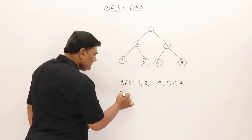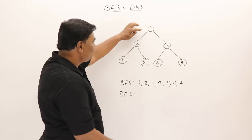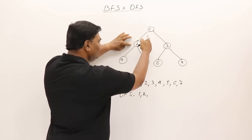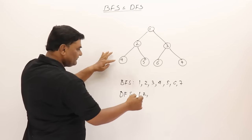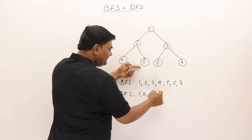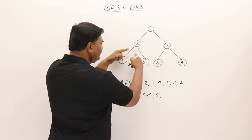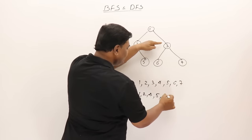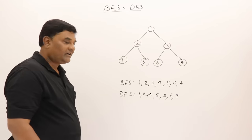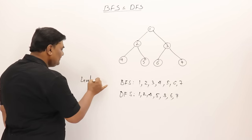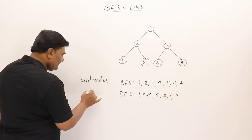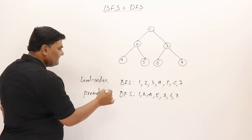What about depth first search? Visit 1, explore 1, we get 2. Stop exploring 1 and start exploring 2. Go to 4, stop exploring 2 and continue exploration of 4 — nothing there. Go back, come to 5, then back to 1 and go to 6, then 7. This is like pre-order. So breadth first search is just like level order, and depth first search is just like pre-order traversal.